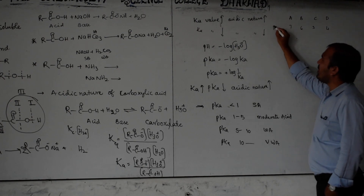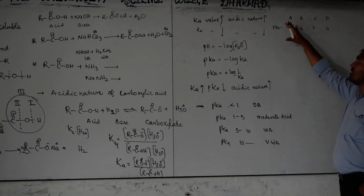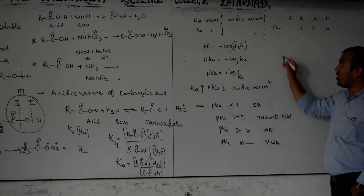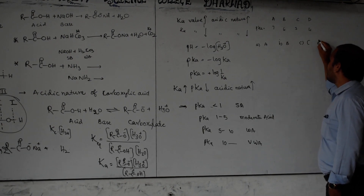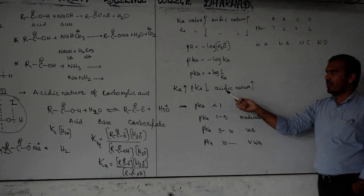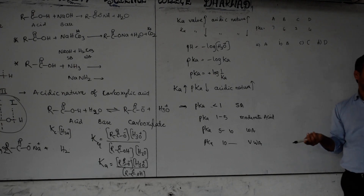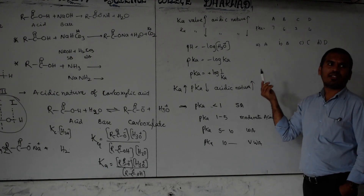Exam example: given four carboxylic acids A, B, C, D with pKa values 10, 7, 6, 3 respectively — which is the strongest acid? Answer: D (pKa = 3), because lower pKa means stronger acid. They may also ask reverse questions: which is more basic (less acidic)? Then the answer is the one with the higher pKa value. Convert whatever question they give based on this principle.